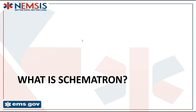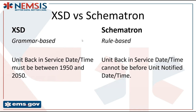Let's take a few minutes with a refresher on what Schematron is and what it does. We have two ways of validating data in the NEMSIS standard. One is through the XSD, or XML schema, and the other is through Schematron, or a Schematron schema. Both are schemas that define what a document should look like. The XSD is grammar-based, whereas Schematron is rule-based.